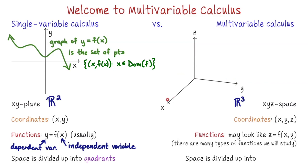We'll talk a little later about how you have to draw this space in this particular way. Sometimes students will look at this picture and think, oh, couldn't you just switch the x and y axes — and you can't. We'll get to that later when we talk about something called the right-hand rule. But for now, anytime you draw a picture of R3, make sure you draw it in a way that matches this. The coordinates, of course, are x, y, z.